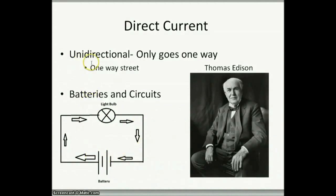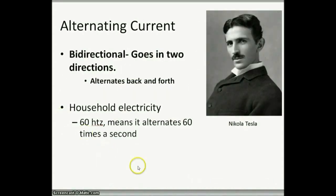This is made famous by Thomas Edison, who really tried to use direct current to power houses and almost powered towns exclusively with direct current. But then a man came along named Nikola Tesla, and he came up with alternating current. Nikola Tesla's name is now also a car brand, the Tesla.